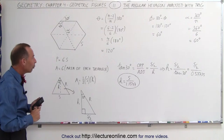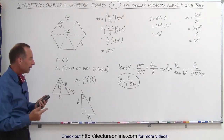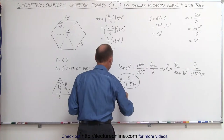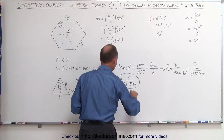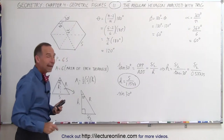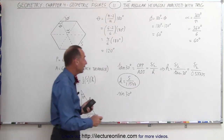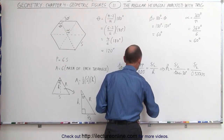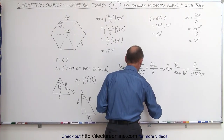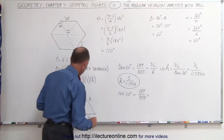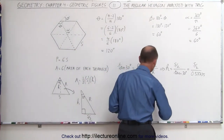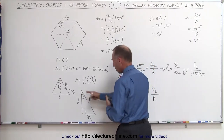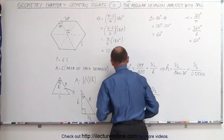We can do the same for the relationship between R and S. There we're going to use the sine function — the sine of 30 degrees. The definition of sine is equal to the ratio of the opposite side divided by the hypotenuse. In this case, the opposite side is again S over 2. But the hypotenuse is R rather than the adjacent side H.